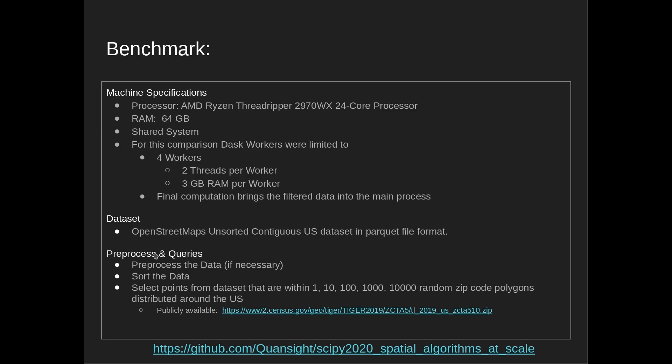The dataset is the OpenStreetMaps unsorted contiguous US dataset. For each case, we preprocess the data if necessary, sort the data, and then select points from the dataset that are within one, ten, a hundred, a thousand, or ten thousand random zip code polygons from around the US.